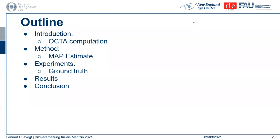In the introduction, I will briefly describe the usual process of generating optical coherence tomography angiography, or OCTA for short, volumes from OCT scans. Then I will describe the MAP estimate we use for reconstruction and the experiments. Generating a suitable ground truth for evaluation poses a particular challenge in our case. I will then show some of our results, followed by the conclusion.